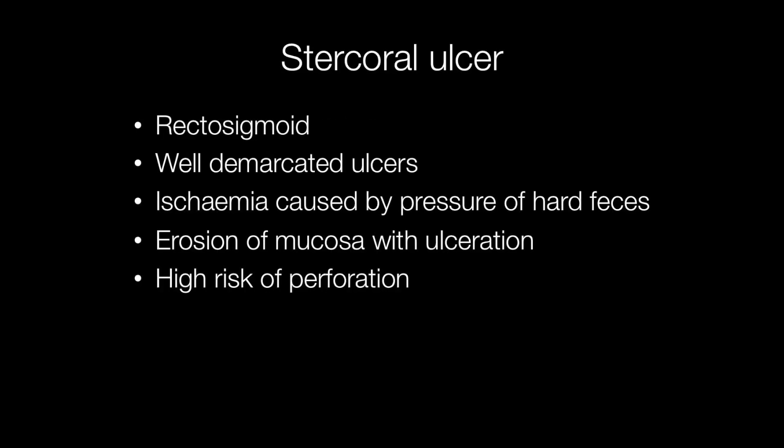They occur in the rectosigmoid region. Grossly, the ulcers are well demarcated and they are caused by ischemia as a result of the pressure of hard faeces or faecoliths on the rectosigmoid mucosa, resulting in erosion and ulceration of the mucosa. This may result in perforation of the bowel wall.